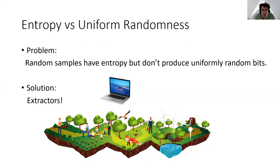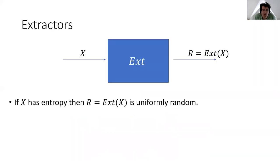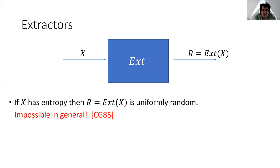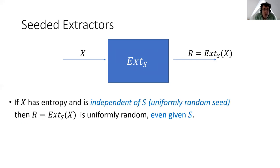The solution to this problem is to use extractors that convert sources of entropy into uniform randomness. The goal is to have some function X which takes some sample x from a high-entropy source and outputs some value r = X(x). Ideally, this would guarantee that as long as x has entropy, the output r would be a uniformly random bit string. Unfortunately, this is too good to be true, and we know such extractors don't exist in general. So instead, we make do with something called seeded extractors, which use an additional component — a random seed — to help extract randomness.